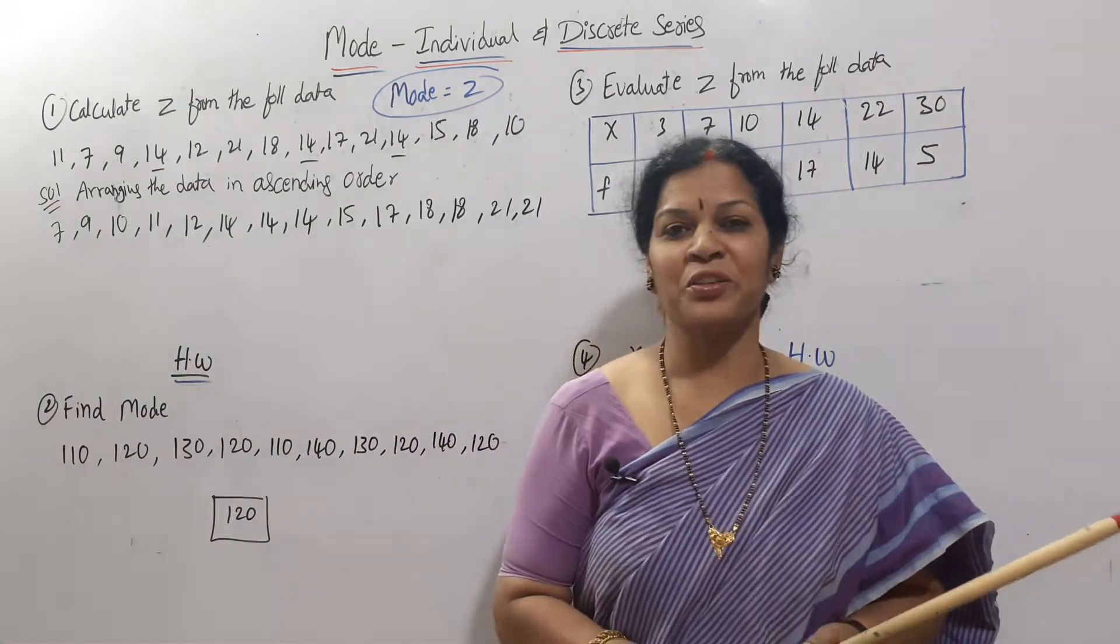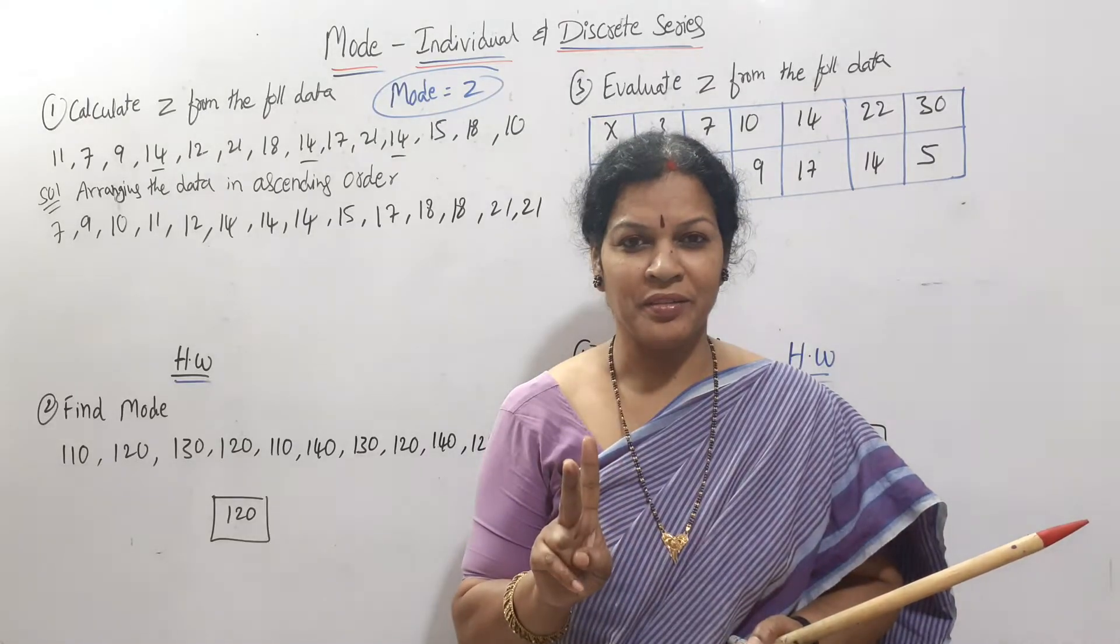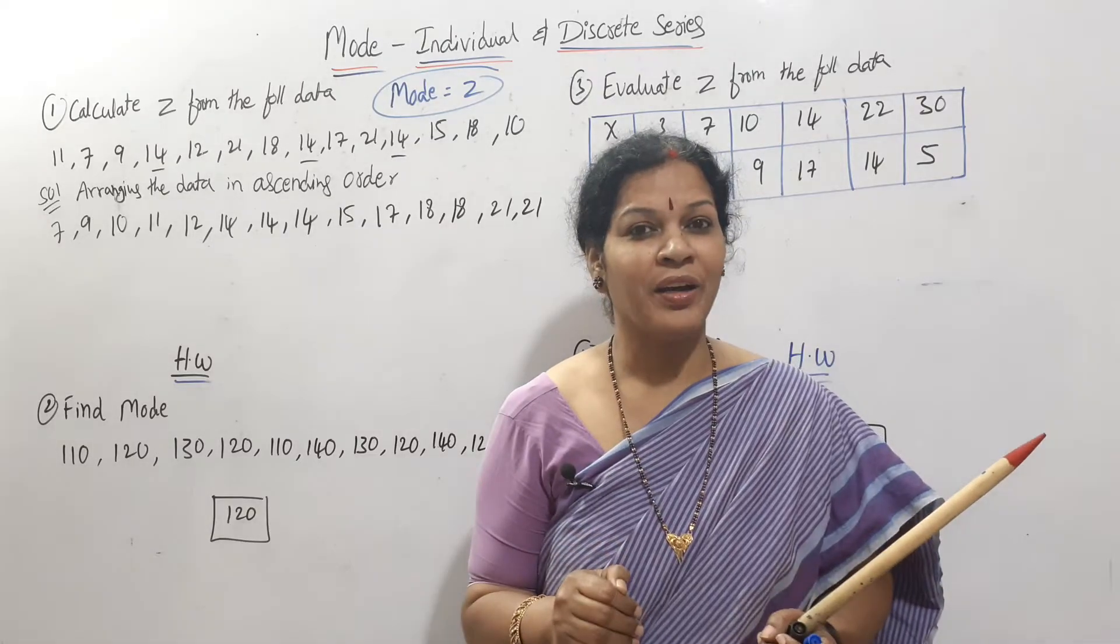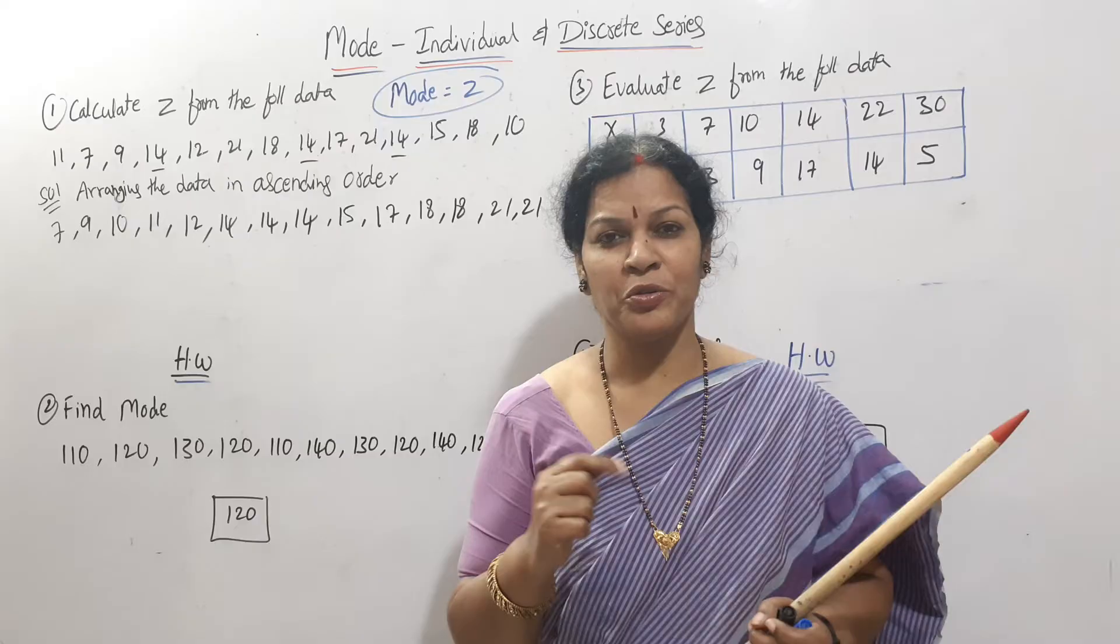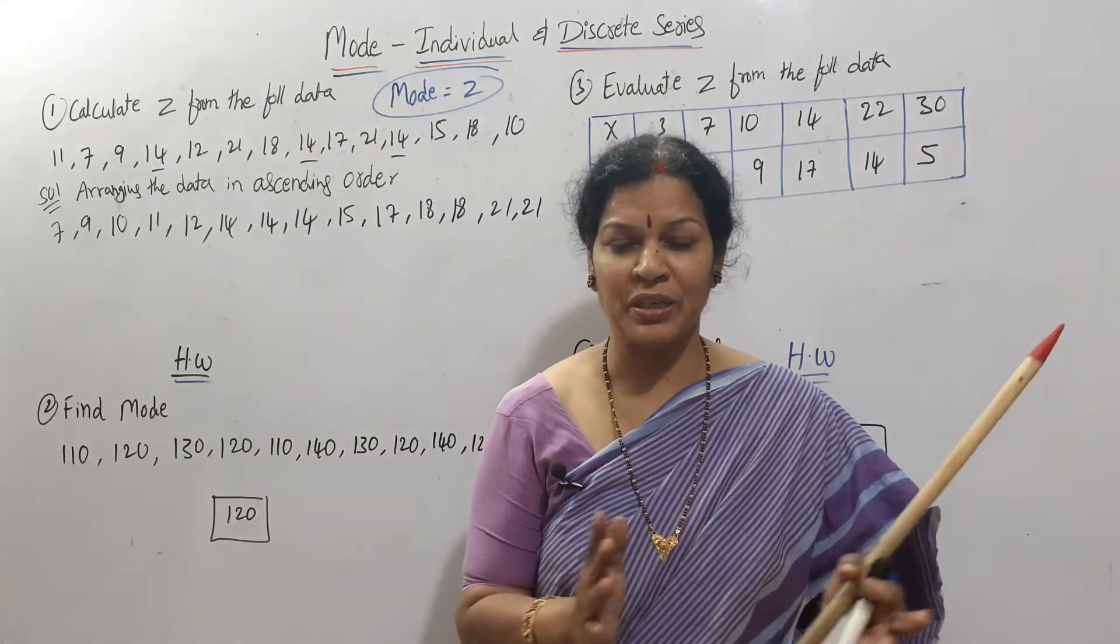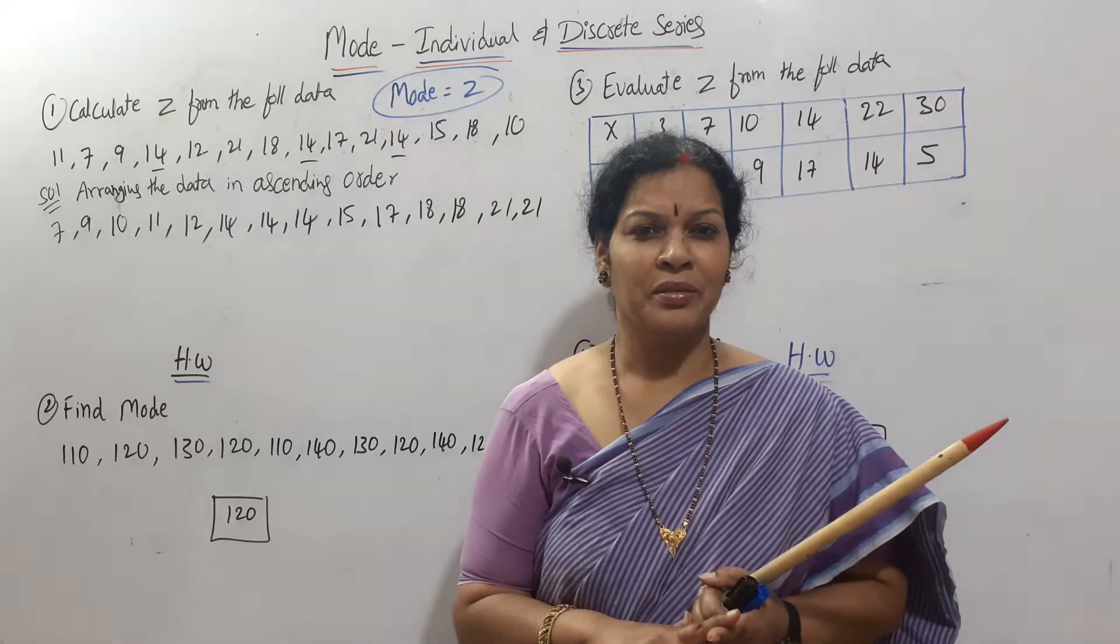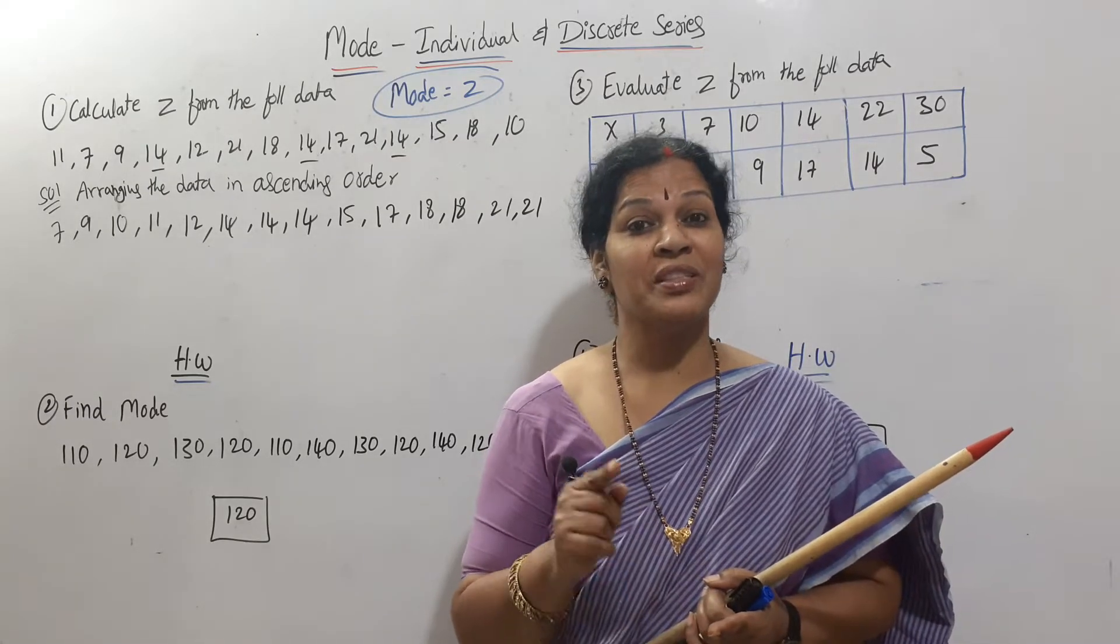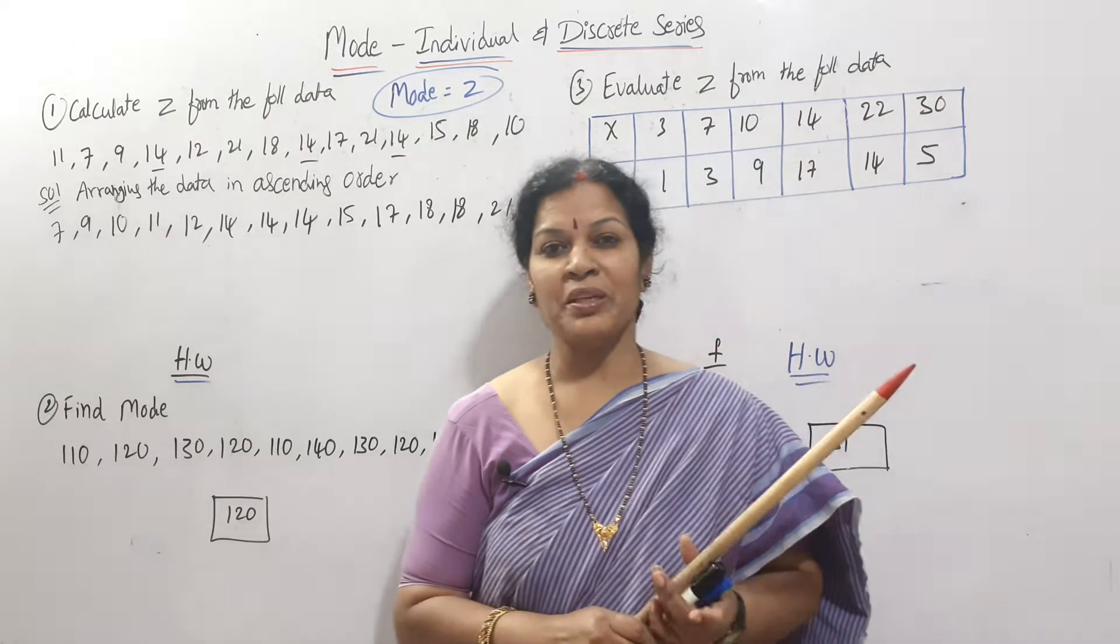Hello dear students, welcome to Devika's Commerce and Management Academy. We have completed mean, median, deciles, percentiles, and median value with OG curves - both less than and more than OG curves - and how to find quartiles with OG curve. In mean, we've also seen combined mean, weighted mean, and missing frequency. Today we are coming to the next topic: mode.